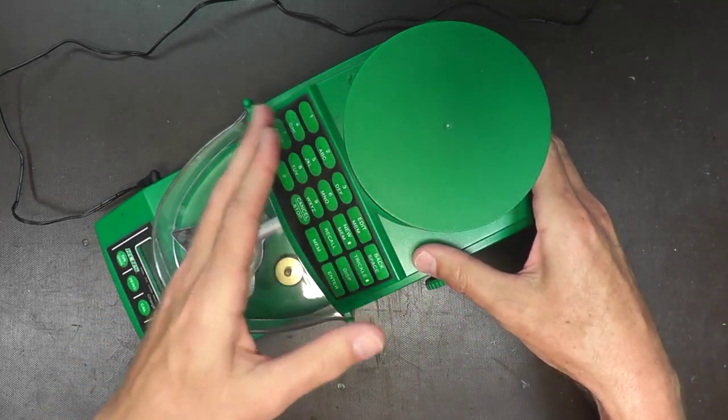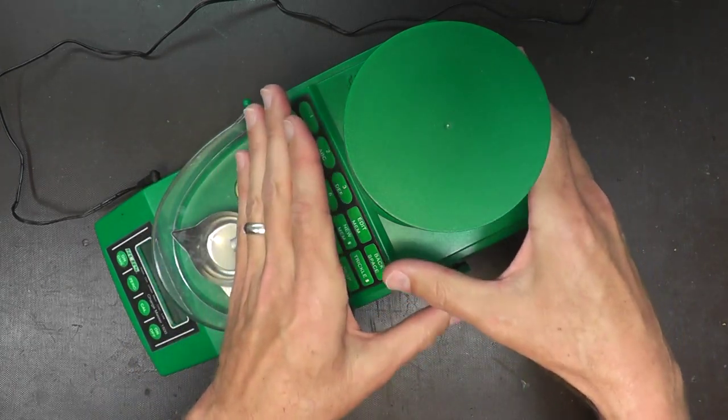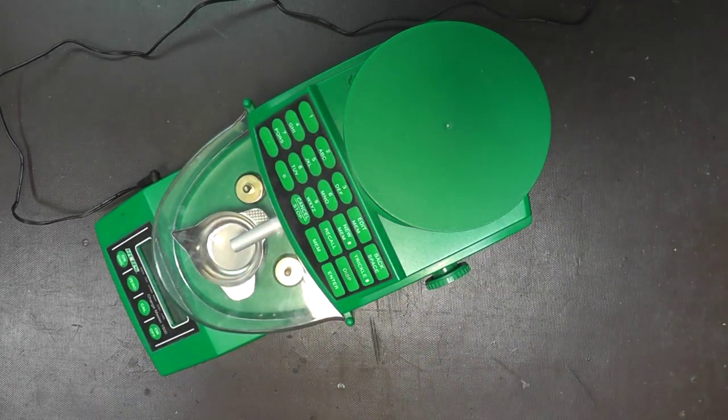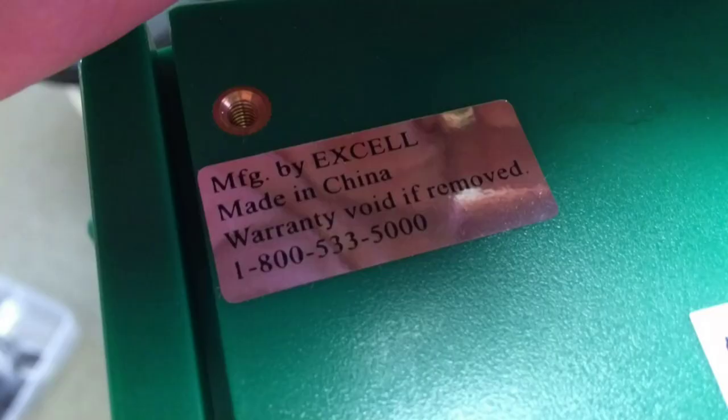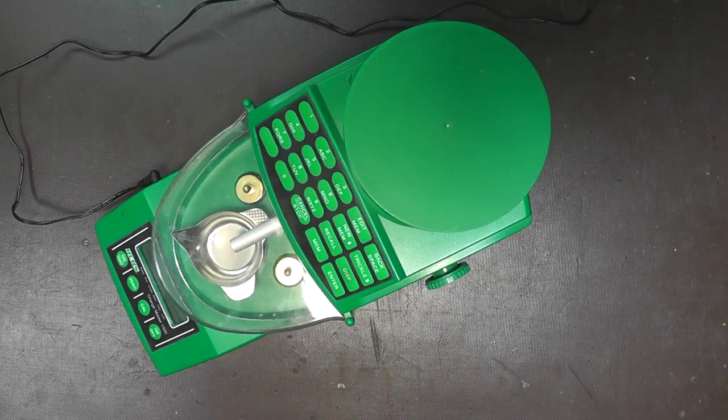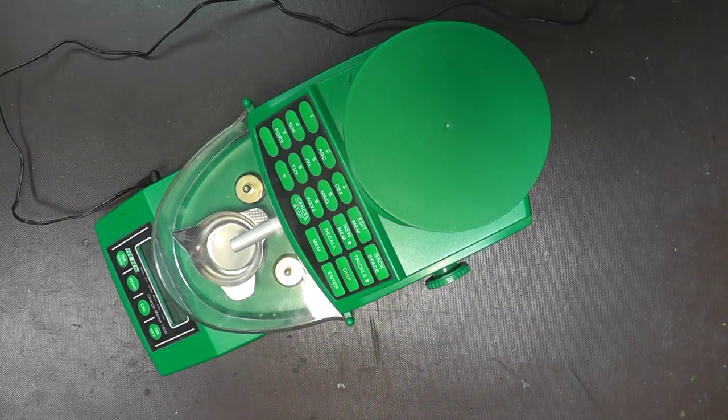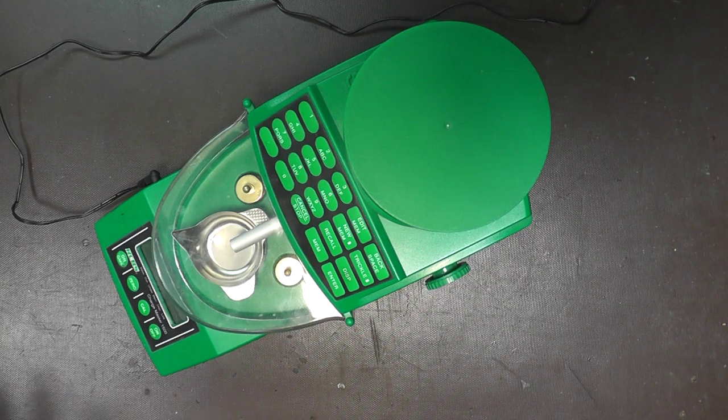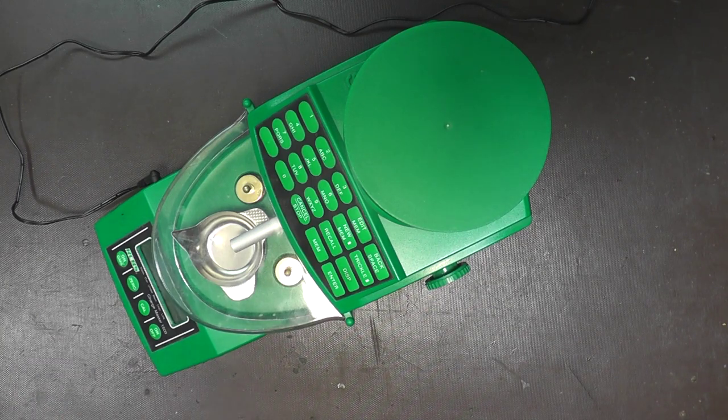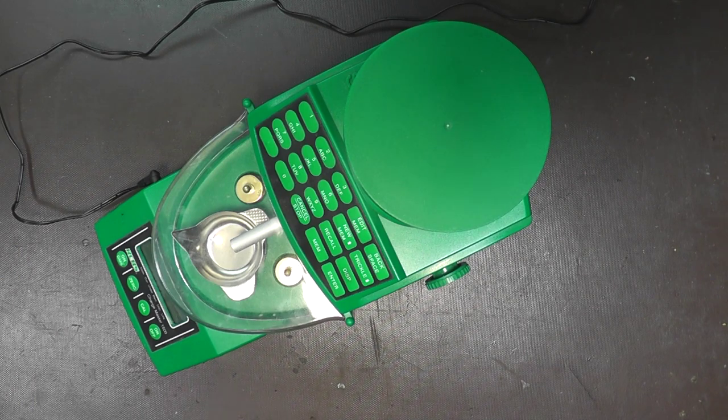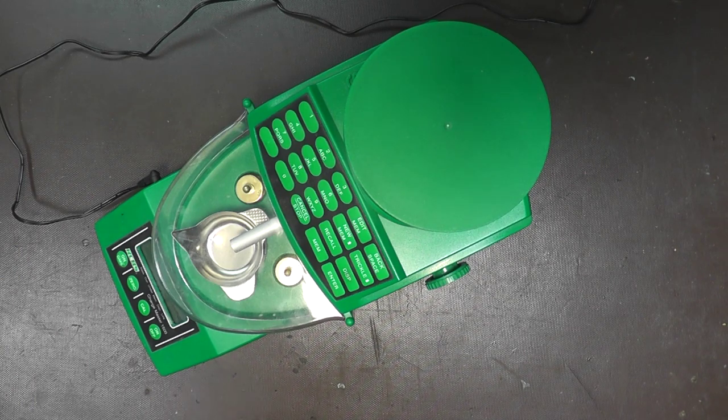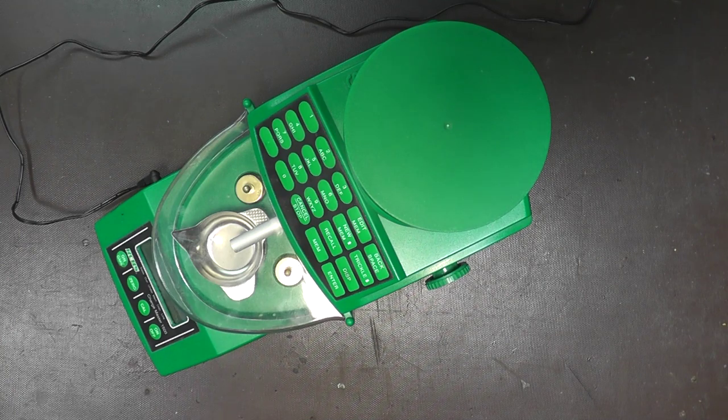So on the bottom of the unit, you're going to see a warranty or security label. Once you pop that open, you've pretty much voided your warranty. However, mine's out of warranty, so I didn't have any problems with that. So you remove these four screws on the bottom, open it up, and when you do, there's a flex cable that connects the upper portion of the powder trickler to the bottom portion where the printed circuit board is.